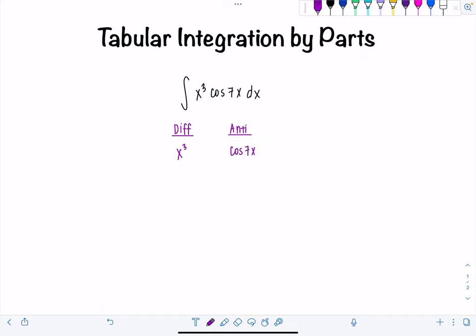So let's go. Derivative of x cubed, 3x squared. Derivative of 3x squared, 6x. Derivative of 6x, 6. Good job. And then one more, right? Now it's zero. So that lets me know I need to anti-differentiate cosine 7x one, two, three, four times. We have to have the same number of entries in both columns.